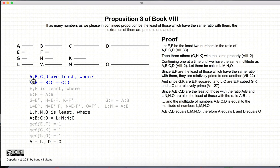We've already shown that L and O are relatively prime. And since A equals L and D equals O, then A and D are relatively prime.